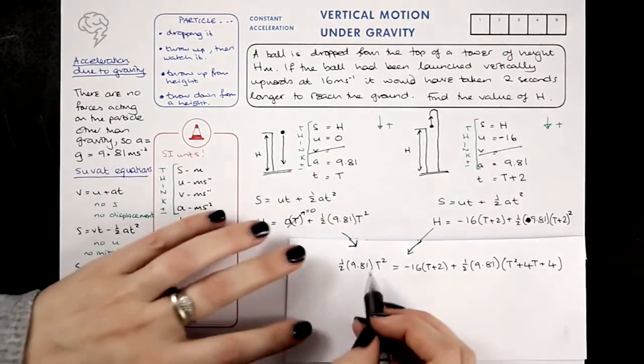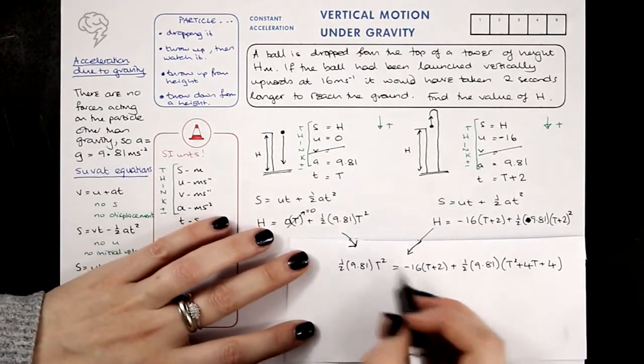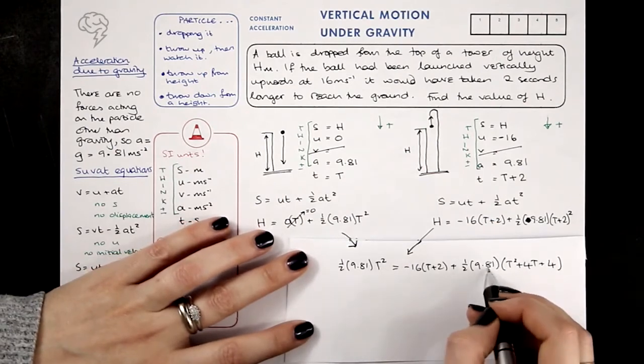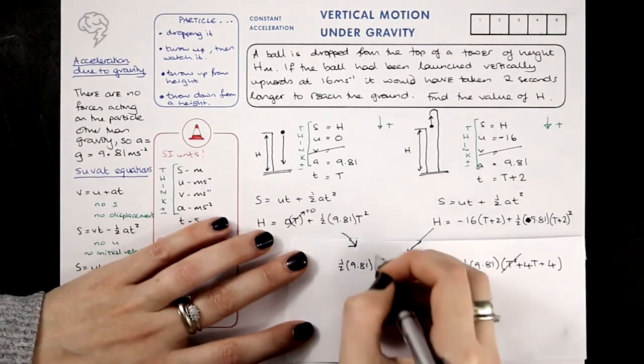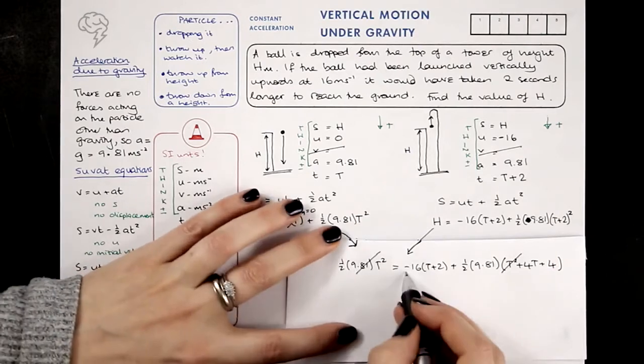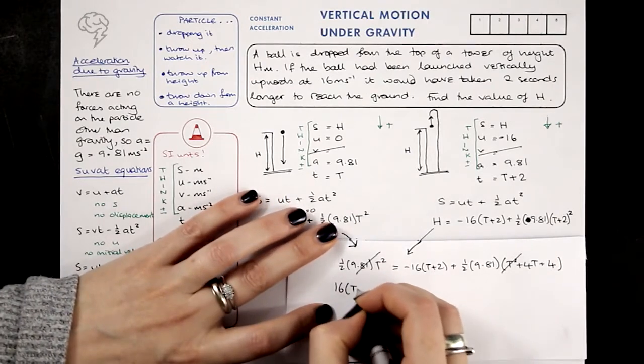So on this side, I've got a half times 9.81 times T squared, and on this side, I've got a half times 9.81 times T squared, so they're going to cancel. And I can put this 16 T plus 2 on the other side to make it positive.